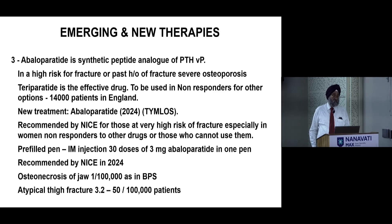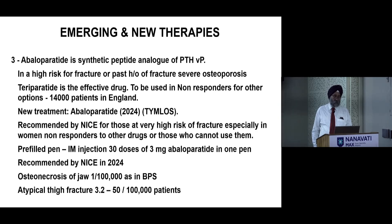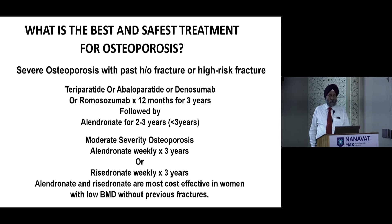Abaloparatide is a synthetic peptide analog currently in use for severe cases of osteoporosis. It can be used in intramuscular format — 30 doses of 3 mg in a pre-filled pen — and was recommended by NICE in 2024. It has the same problems as bisphosphonates.